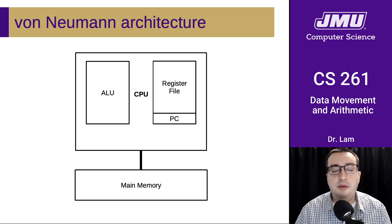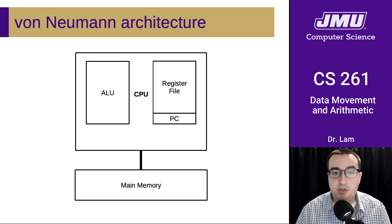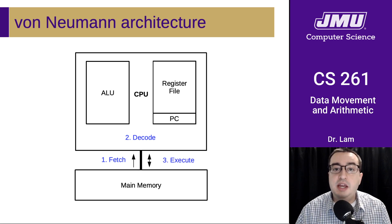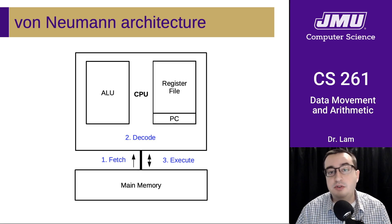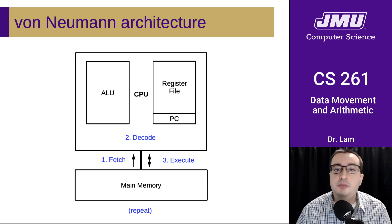As a quick reminder, we're talking about the standard von Neumann architecture. This is a simplified version of what a system diagram might look like. The basic cycle that repeats while a program executes is that the CPU will fetch an instruction from main memory, decode it to figure out what it needs to do, and then execute it — which may involve writing to memory, writing to or reading from registers, and doing operations on the arithmetic logic unit. It just keeps doing this until the program is done. We need to start by talking about how we move data around between registers and memory.